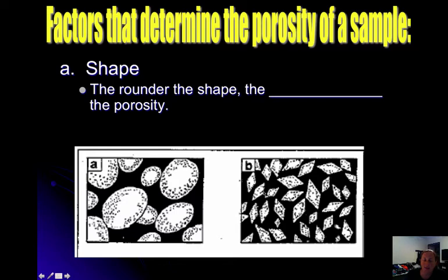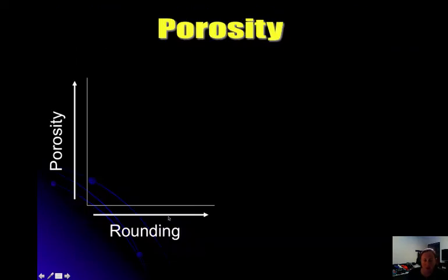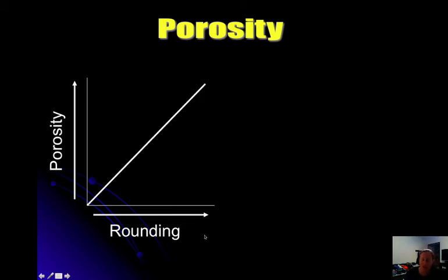There are different factors that affect porosity. Based on shape: the rounder the shape, the greater the porosity. Rounder shapes allow more water to squeeze in between particles than angular shapes do. Looking at a graph, as rounding increases, porosity also increases. So as your sediment gets rounder, there is more porosity.